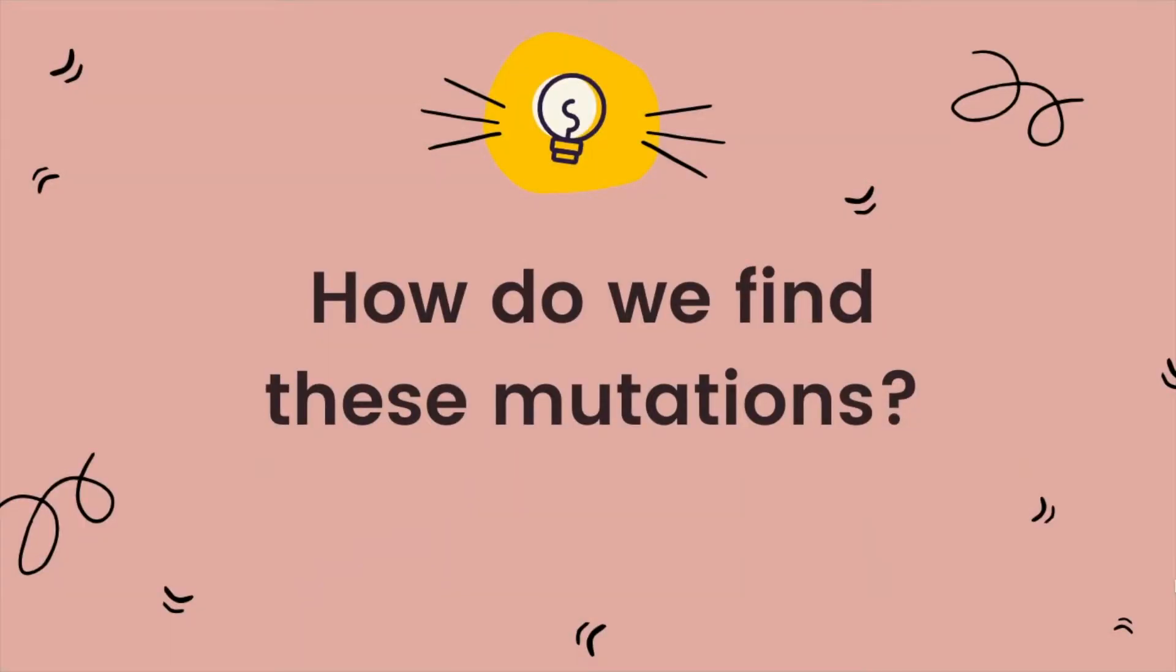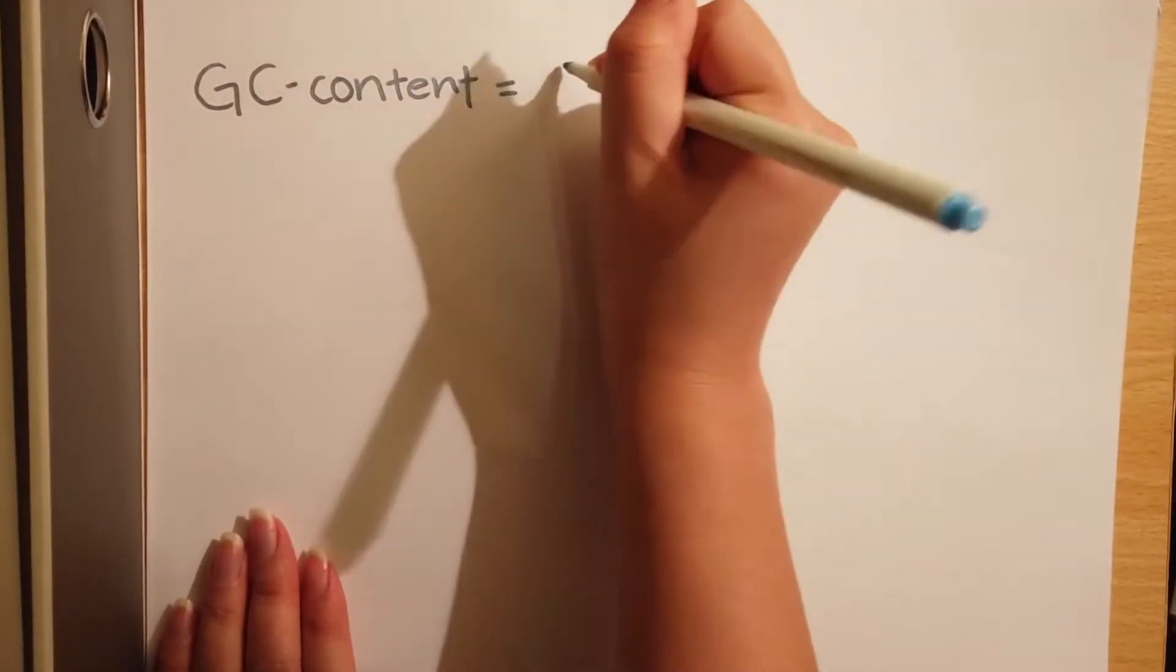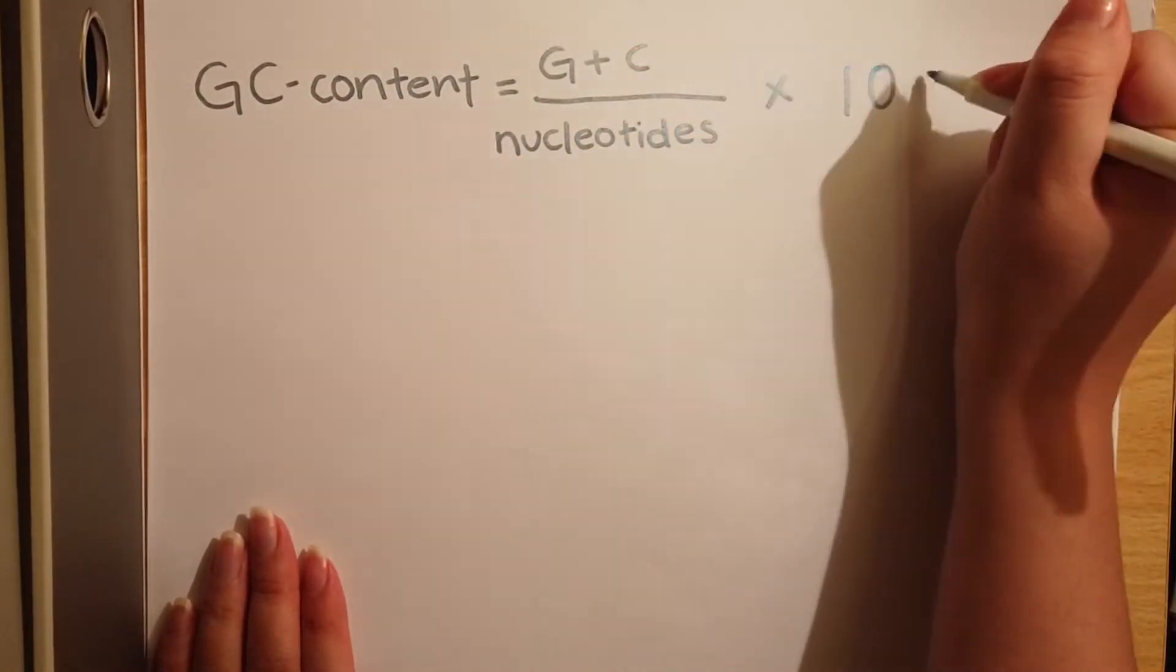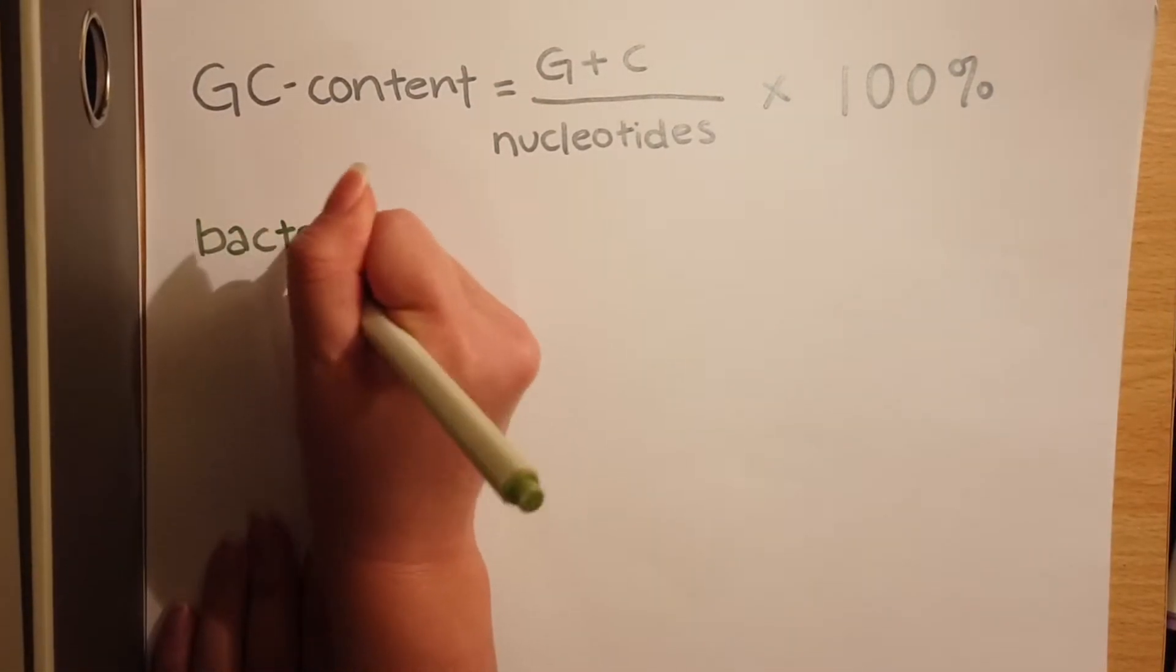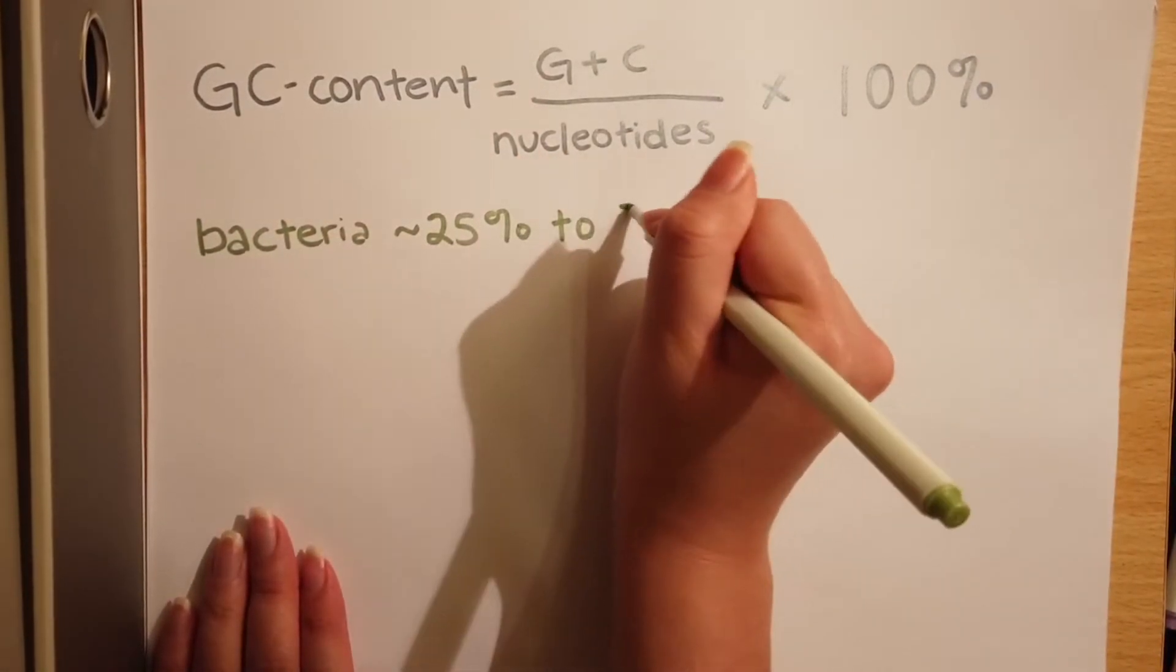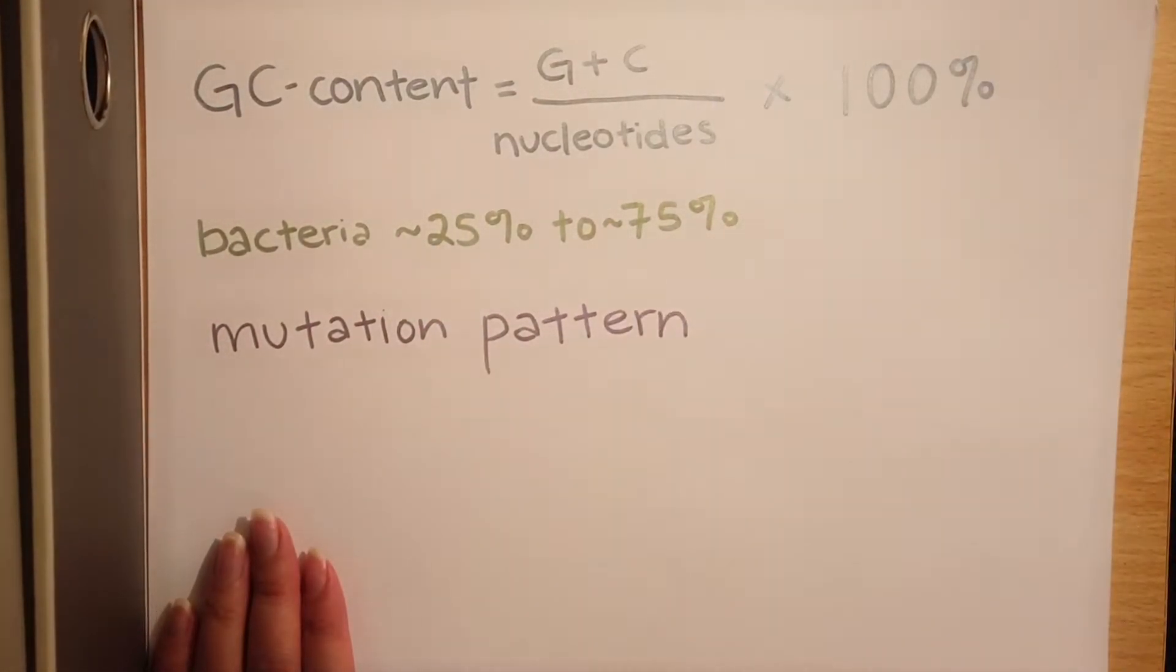So how do we find these mutations? The answer is knowing the GC content of the genome. GC content is the percentage of guanine and cytosine in the genome. For bacteria, the range of GC content is varied from being less than 25% to just about 75%, and studies suggest that this variation may be due to differences in mutation patterns.